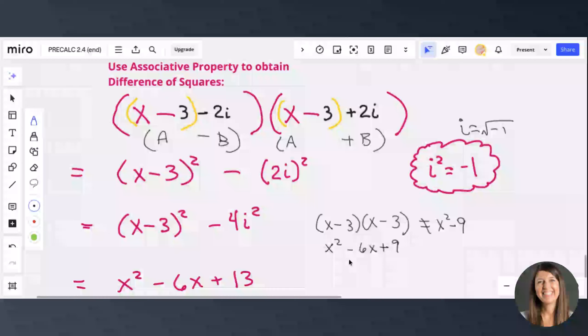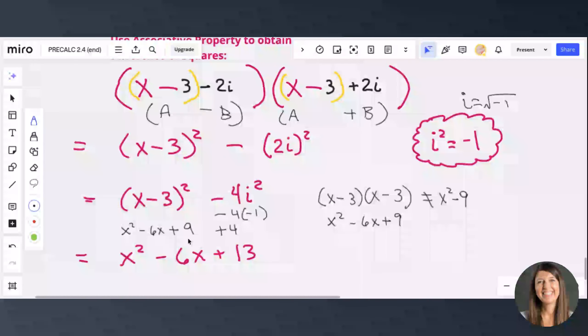So we combine x minus 3 squared, which is x squared, minus 6x plus 9. And then we add up our like terms, and we get x squared minus 6x plus 13.